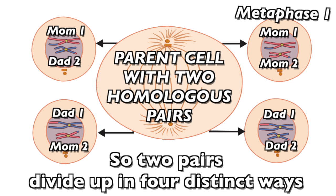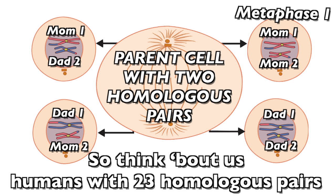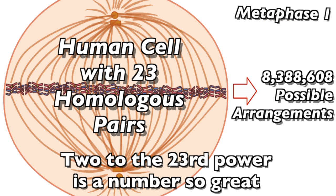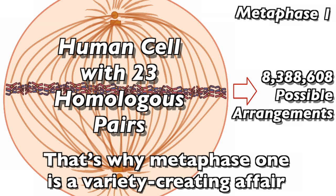So two pairs divide up in four distinct ways — it's two to the power of the number of pairs, you could say. Think about us humans with 23 homologous pairs: two to the 23rd power is the number, so great it's 8,388,608. That's why metaphase one is a variety-creating affair.